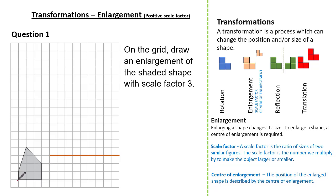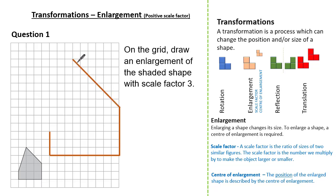We have a vertical height of one square, so multiplying by three gives a vertical height of three squares. There's also a vertical height of two squares, so multiplying by three gives six squares. Looking at the diagonal, we've gone diagonally across two squares, so multiplying by a scale factor of three means we go diagonally across six squares. Finally, we simply connect the shape and we've drawn our enlarged shape by a scale factor of three.